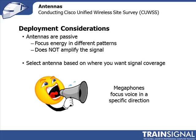Like the megaphone example where it pushes all your energy in one direction — that's what happens when you create a beam. People often get confused and think the energy is going further and therefore the signal must be amplified. This is not the case. Antennas are passive; there is no increased energy. All the antenna does is take the energy it receives from the access point via the cable and pushes it into certain patterns and directions. The only reason it goes further is because rather than radiating all around, it's being pushed into one direction. Remember: antennas are passive — they are not amplifying your signal.